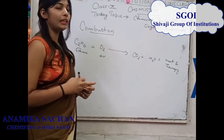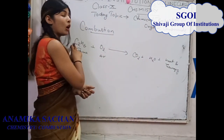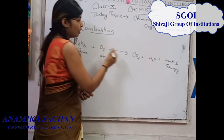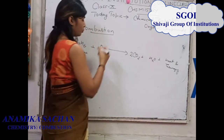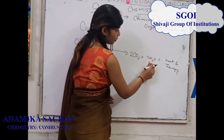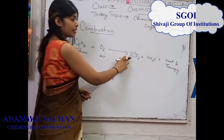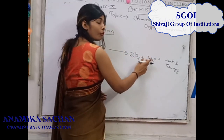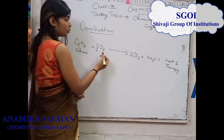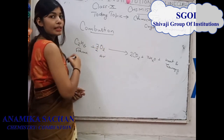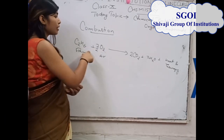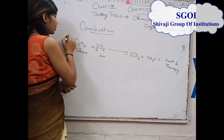Now let's balance this chemical reaction. The number of carbon is 2. Number of hydrogen is 6, so 3×2 = 6. Number of oxygen: 2×2 = 4, and 4+3 = 7, so 7/2 — multiply by 2 to cancel, giving 7 oxygen atoms. The chemical reaction is now balanced. That is the first combustion reaction.